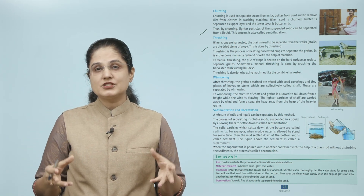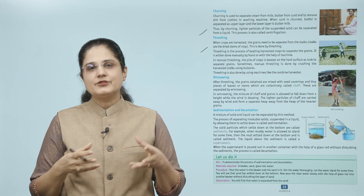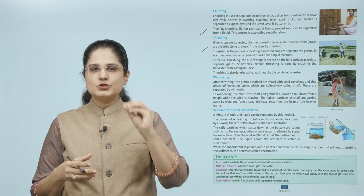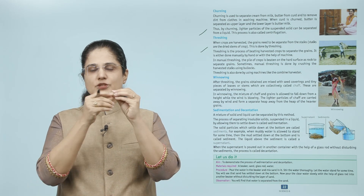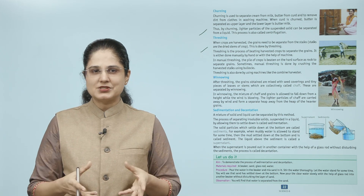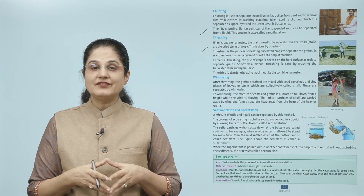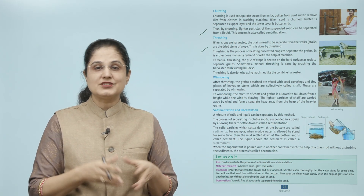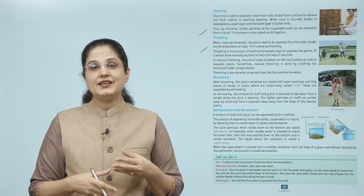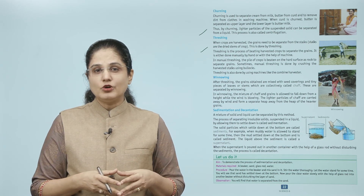Next we have threshing. When crops are harvested, the grains need to be separated from the stalks — stalks are the dried stems of the crop. This is done by threshing. Jab aapki fasal taiyar ho jaati hai aur grains ko tehniyon (stems) se nikalna hota hai, tab aap threshing process use karte hain. Threshing is the process of beating harvested crops to separate the grains.